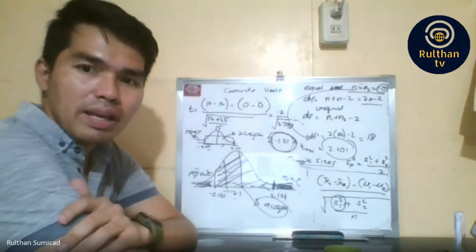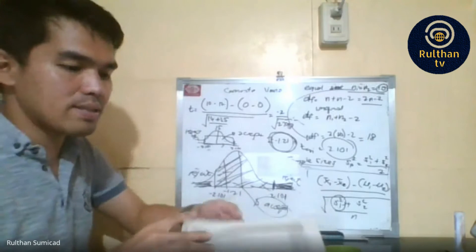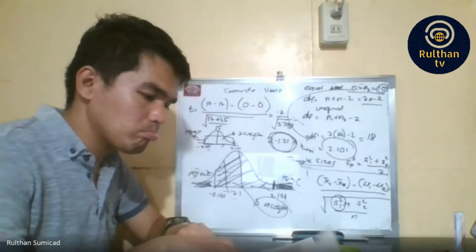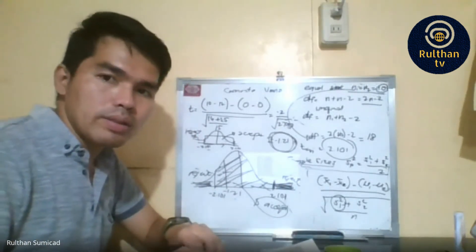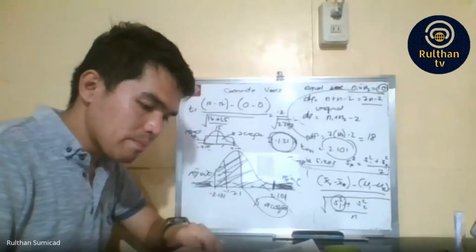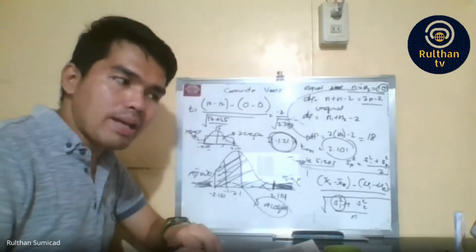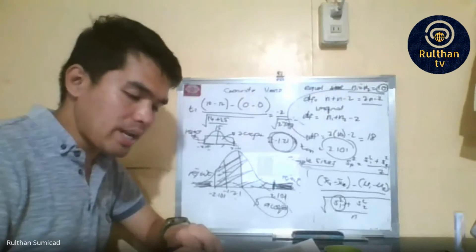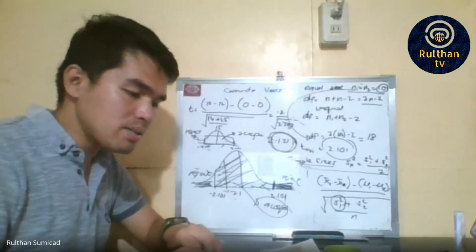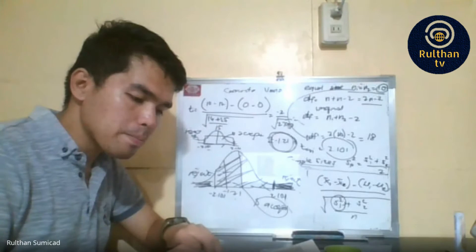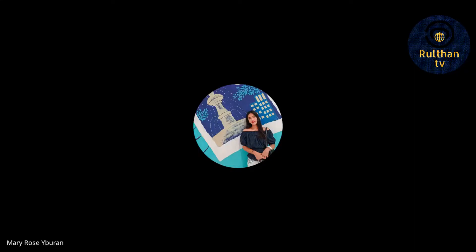Part B: What are the T-critical values? With df equals 21, two-tailed test, alpha equals 0.05, the T-critical is 2.081. With alpha equals 0.01, the T-critical is 2.831.